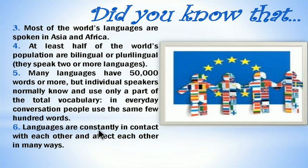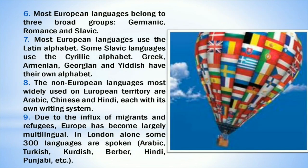Languages are constantly in contact with each other and affect each other in many ways. Most European languages belong to three broad groups: Germanic, Romance, and Slavic. Most European languages use the Latin alphabet. Some Slavic languages use the Cyrillic alphabet. Greek, Armenian, Georgian, and Yiddish have their own alphabet.